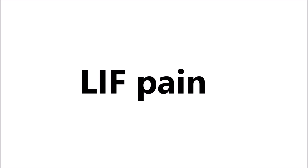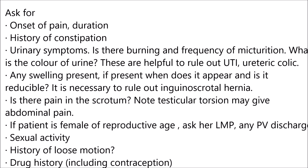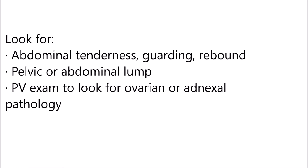In case of lower left iliac fossa pain, ask for the onset of pain, duration, history of constipation, and urinary symptoms — burning and frequency of micturition, color of urine. These help rule out urinary tract infection and urinary colic. Is there any swelling — when does it appear and is it reducible? Rule out inguinoscrotal hernia. Is there pain in the scrotum — testicular torsion may give abdominal pain. If the patient is female of reproductive age, ask for the last menstrual period, PV discharge, sexual activity, history of loose motions, and drug history including contraception. Look for abdominal tenderness, guarding, rebound, pelvic or abdominal lump, and PV exam to look for adnexal pathology. Investigations are similar to those for right iliac fossa pain.